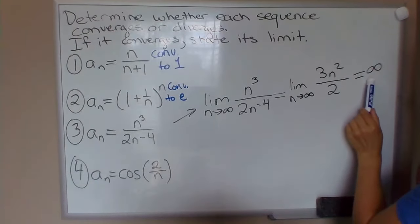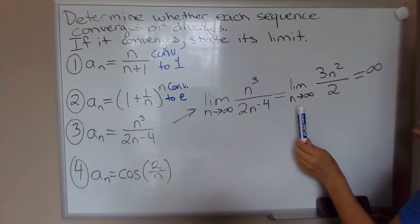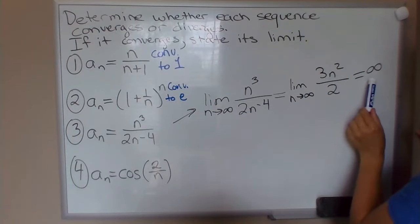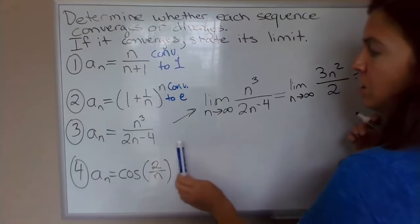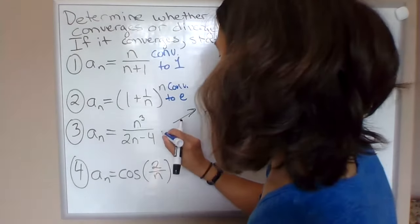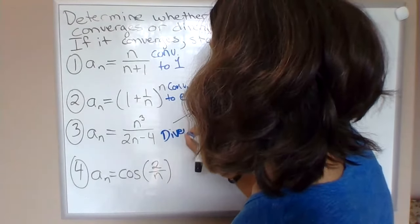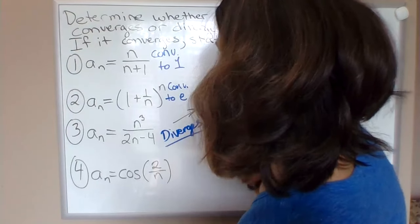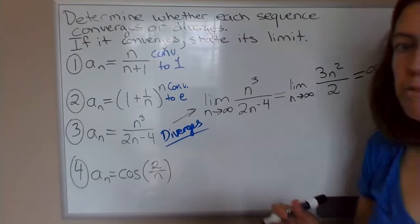So remember, when a limit is equal to infinity, we're saying really that the limit doesn't exist. It's not approaching some finite number. It's just increasing without bound. So this limit diverges, which means this sequence right here, number 3, diverges. The limit of the terms does not approach some finite number.